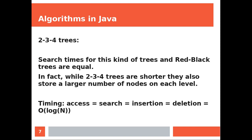Search times for this kind of tree and red-black trees are equal. In fact, while two-three-four trees are shorter, they also store a larger number of nodes on each level.